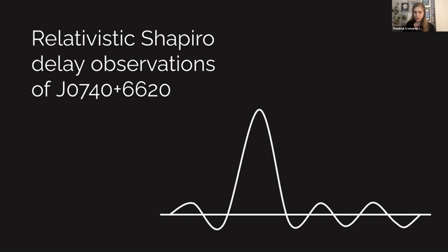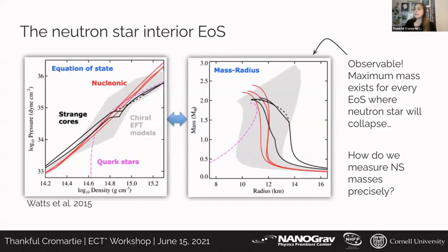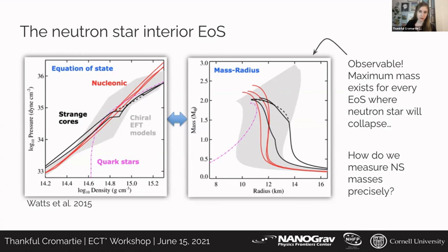We will talk about pulsar J0740+6620, which the vast majority of you will recognize. We know that the equation of state can be translated into the mass-radius relationship. If we're able to precisely determine the mass of a millisecond pulsar, we can put constraints on the equation of state. Because of that asymptotic behavior, every measurement of a higher and higher mass neutron star has the potential to help make those equation of state constraints.